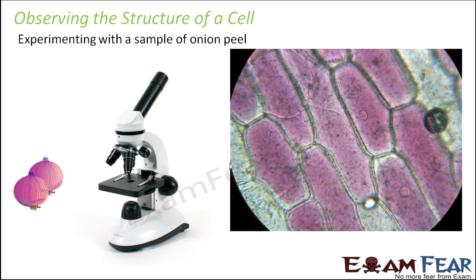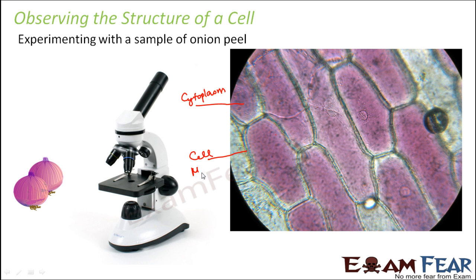What do you see? You will see these kinds of structures — these are the boundaries of each cell. This is what was discovered by Robert Hooke as the cell. You can see some fluid-like material inside; this material is nothing but the cytoplasm, and the boundaries are nothing but the cell membrane, also known as the plasma membrane, because it covers the plasma or fluid inside.